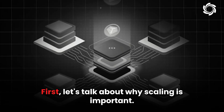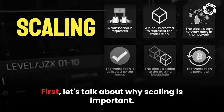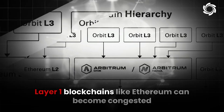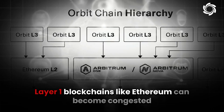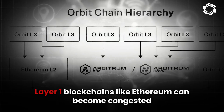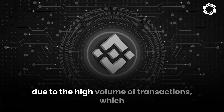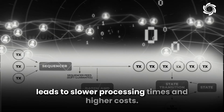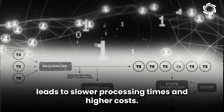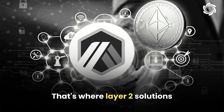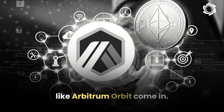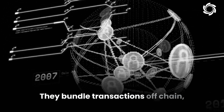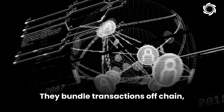First, let's talk about why scaling is important. Layer 1 blockchains like Ethereum can become congested due to the high volume of transactions, which leads to slower processing times and higher costs. That's where Layer 2 solutions like Arbitrum Orbit come in. They bundle transactions off-chain, making them faster and cheaper.